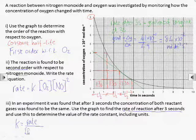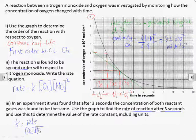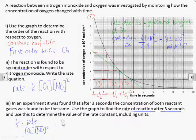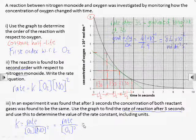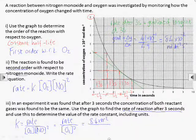If we rearrange the rate equation, we can see that the rate constant is equal to the rate divided by the concentration terms. We can use that rate at three seconds that we just worked out, along with the concentration at three seconds, which we need to read from the graph, to find the rate constant.